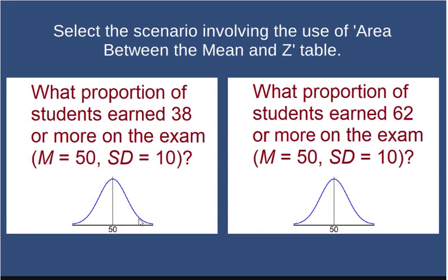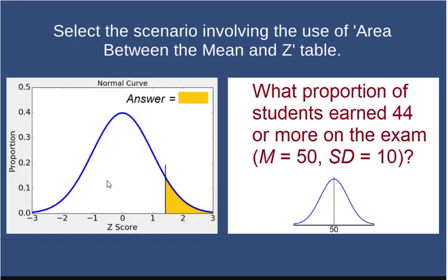38 or more—again, more than half the distribution. I'd use the area between the mean and z. This scenario shows less than half the distribution, so I know it's not the answer. I'll pick the one on the right.